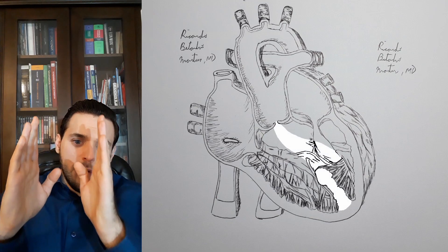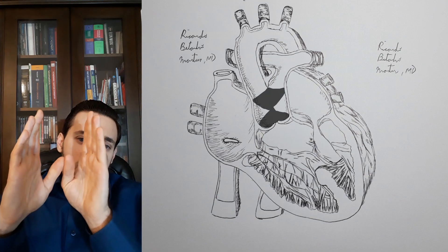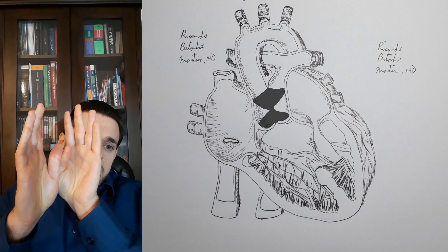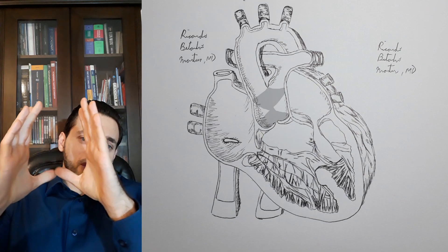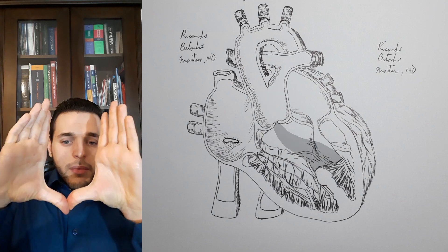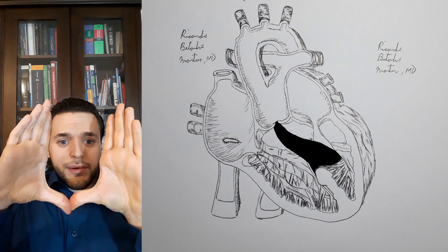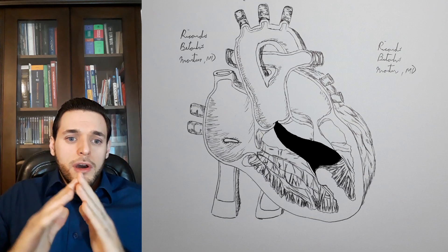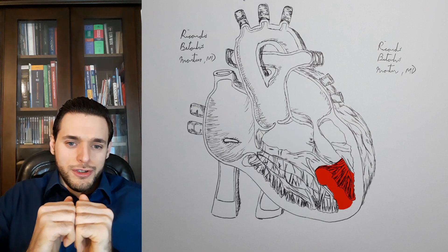If the neural crest cells fail to form the aorticopulmonary septum, they are unlikely to have been successful in forming the membranous portion of the interventricular septum. Therefore, we will have only the muscular portion.